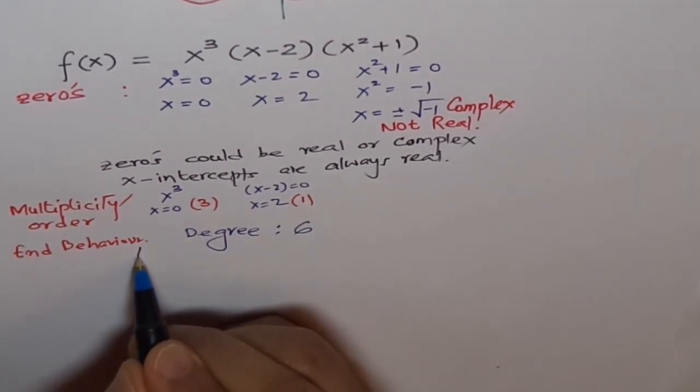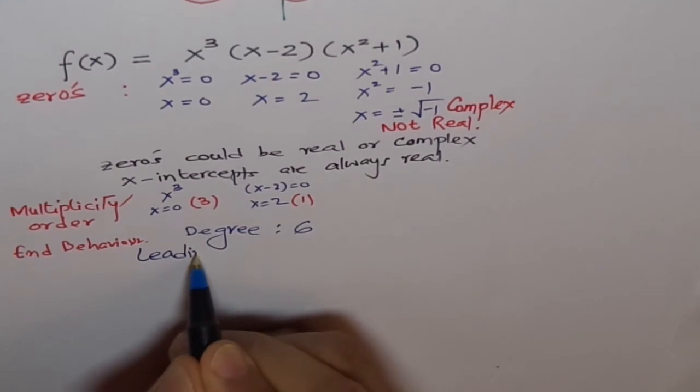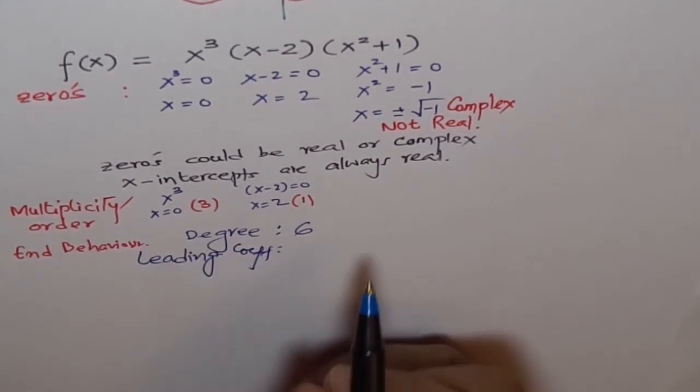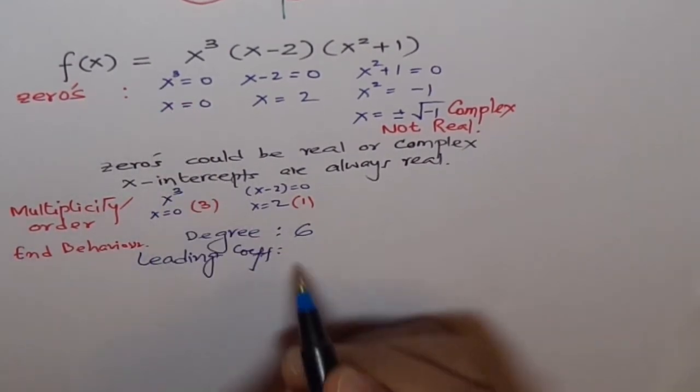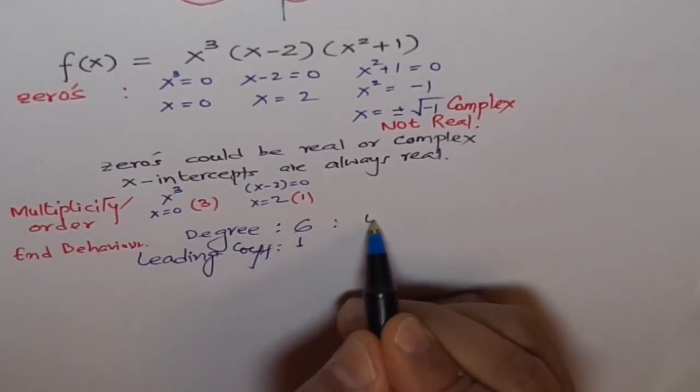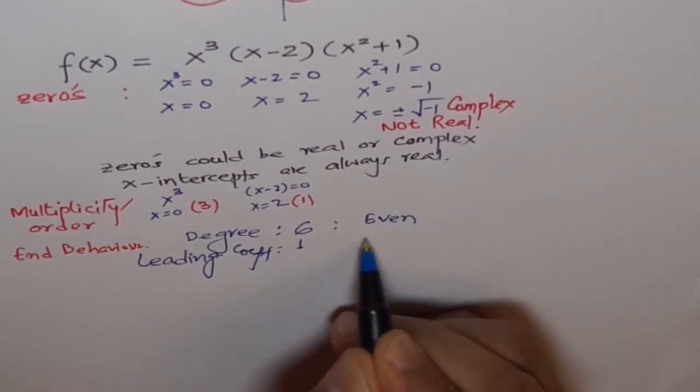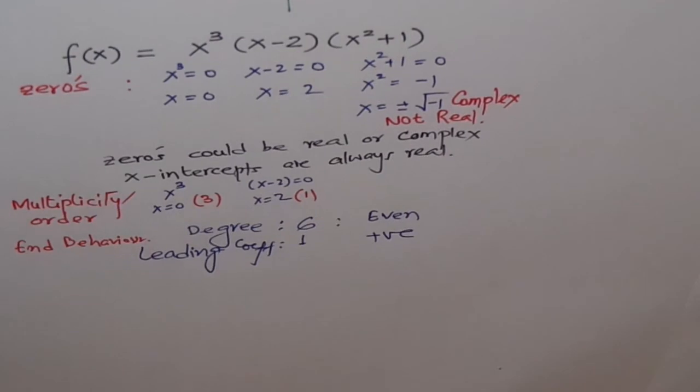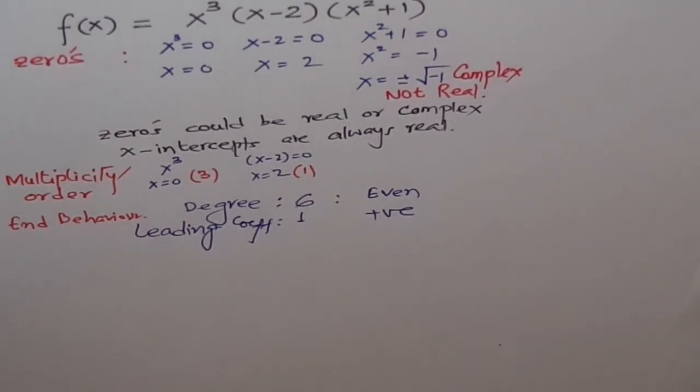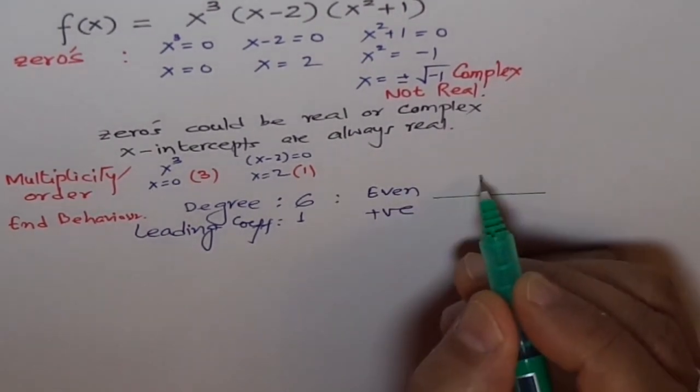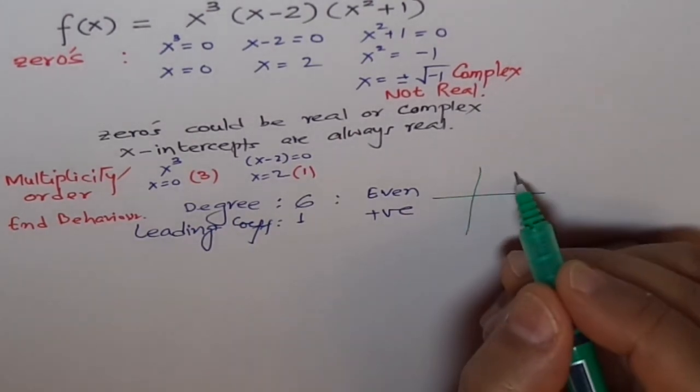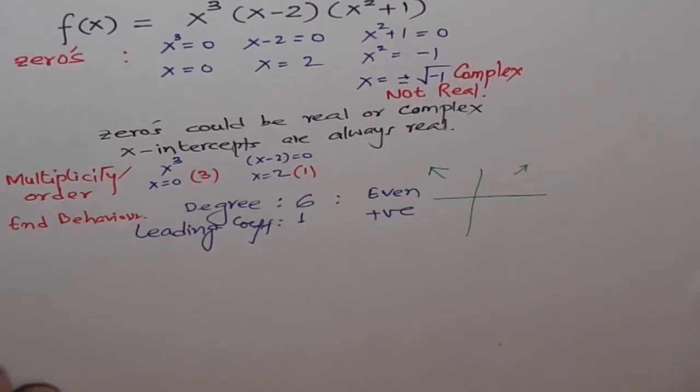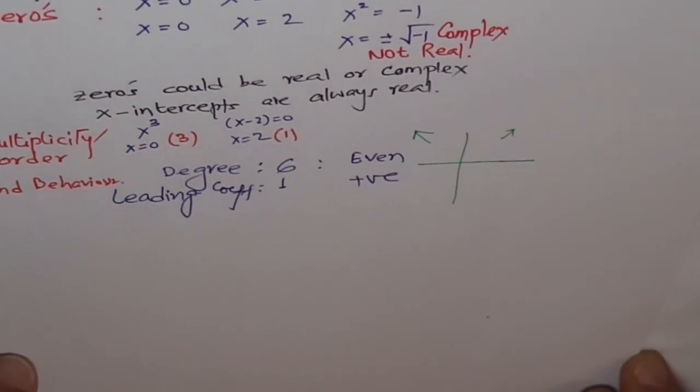How about the leading coefficient? Leading coefficient is plus one. That means even degree and positive leading coefficient. Correct? Now, in this case, when we have even degree and positive leading coefficient, we should expect end behavior as both sides up.